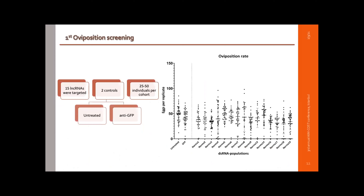We first validated the expression pattern of the shortlisted long non-coding RNAs and verified their post-blood-meal-specific expression for 15 of them. We then performed an initial phenotypic screening of those 15 genes, with two controls: a GFP control and an untreated control — meaning insects reared under the same conditions throughout the experiment.